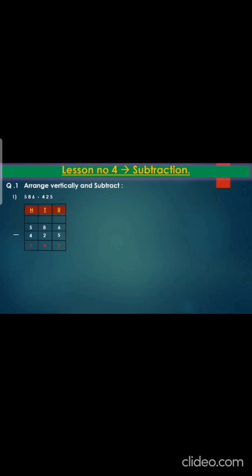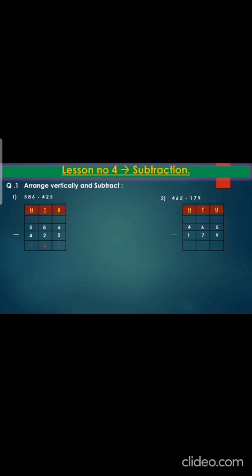Now let's do question number 2: 465 minus 179. Make the box with a pencil. Write hundreds, tens, units. Then copy down the question 465 minus 179. Now children, you cannot do 5 minus 9, so we have to borrow from the neighbor — that is, get 1 from 6, we will get 5. Give it to this 5 and write 15. Now 15 minus 9 will be 6. Now again we cannot minus 5 minus 7, so we have to borrow from 4 — remove 1, write 3, and give 1 to the 5, it will become 15. So 15 minus 7 is 8. And 3 minus 1 is 2.